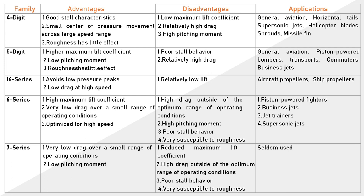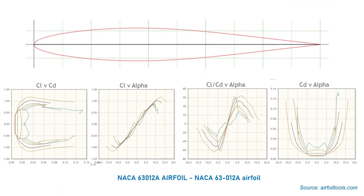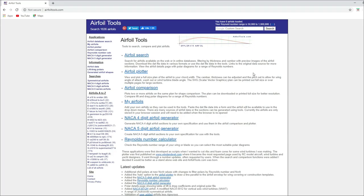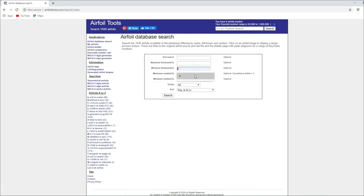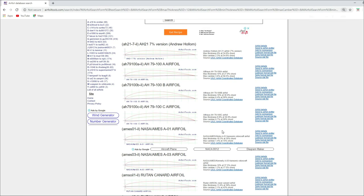There are several airfoil series, each with its own advantages and disadvantages. Based on the application — business aircraft, large passenger aircraft, or fighters — select the appropriate series. Using the airfoil tool website, input minimum thickness of 9% and maximum of 12%, and search all airfoil types. Many sample airfoils appear; from these, select the best one based on the criteria.